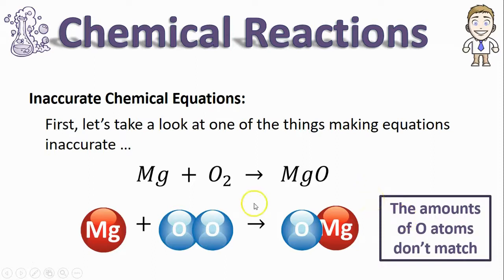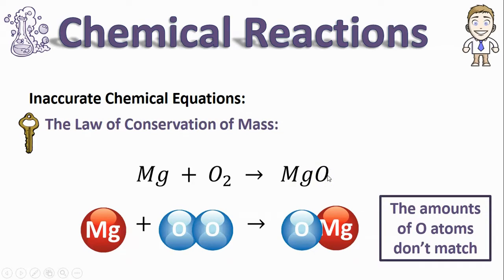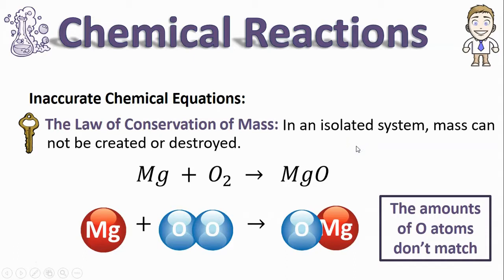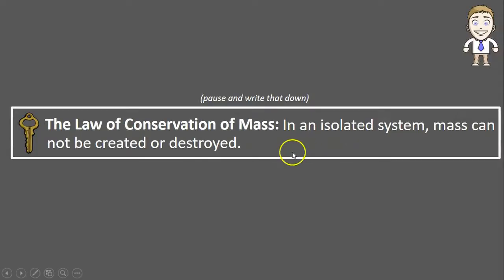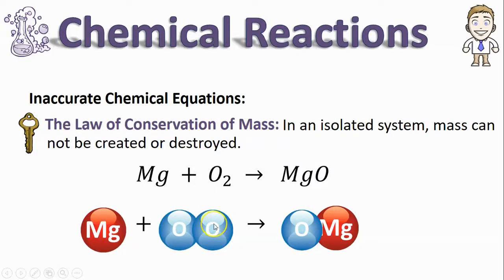In fact, it seems like one of these oxygen atoms has completely disappeared or gone away. This is impossible according to a law called the law of conservation of mass. This law says that in an isolated system mass cannot be created or destroyed, so this oxygen atom that I lost is impossible to destroy or lose.